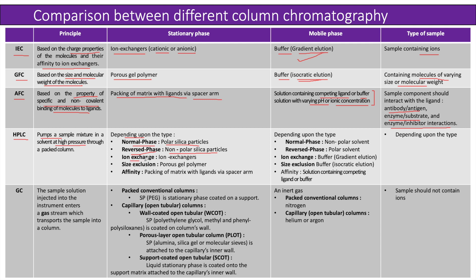For ion exchange HPLC, it uses ion exchangers which may be cationic or anionic. For size exclusion, it uses a porous gel polymer of different pore sizes. For affinity, it uses packing of matrix with ligands via spacer arm. The mobile phase also depends on the type of HPLC: normal phase uses non-polar solvent, reverse phase uses polar solvent, ion exchange uses buffer with gradient elution, size exclusion uses buffer with isocratic elution, and affinity uses solution with competing ligands or buffer with varying pH or ionic concentration.